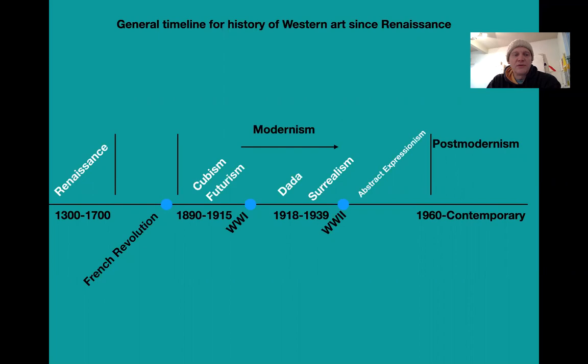We've got the Renaissance from 1300 to around 1700. Then some important milestones at the French Revolution, like realism happening around there. Cubism and futurism that we've mentioned, Dadaism and surrealism we'll look at, abstract expressionism — all happening in the modernism period. And then we've got postmodern, which is 1960 until now. This is a really general timeline I want you to have familiarity with, and we'll see this slide added to later on.